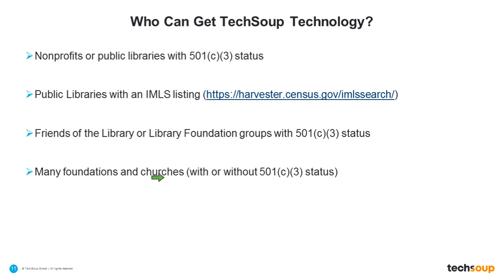We can often verify your status if you are part of a branch of churches, a diocese, or similar. These organizations are generally qualified to access donations through TechSoup. All of our donation programs have different requirements and eligibility restrictions — whether your mission is a soup kitchen, animal shelter, Save the Watershed organization, community foundation, historical society, arts organization, or a church — all may have different eligibility and different donations available.